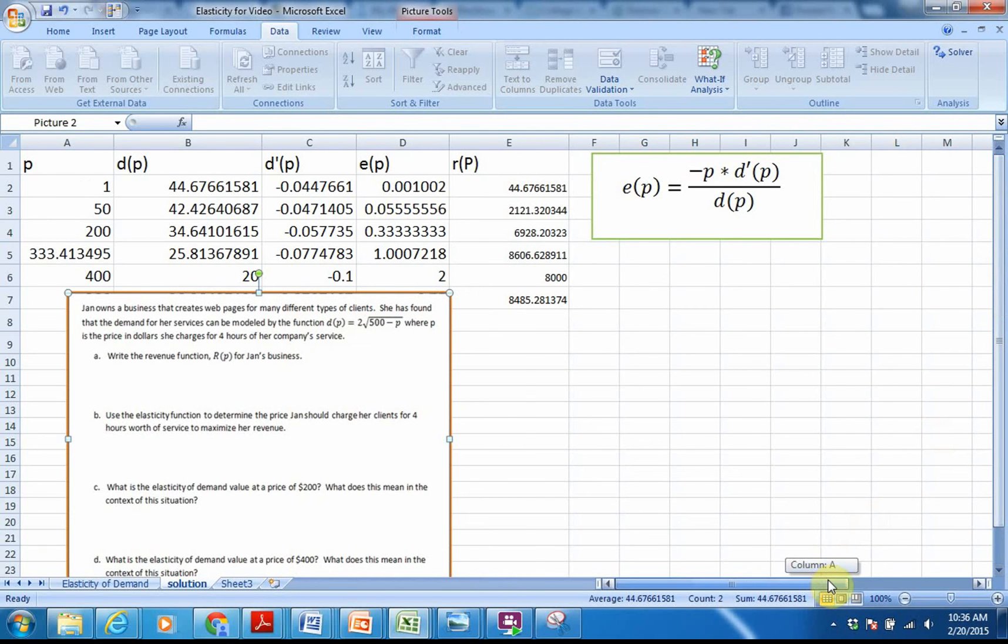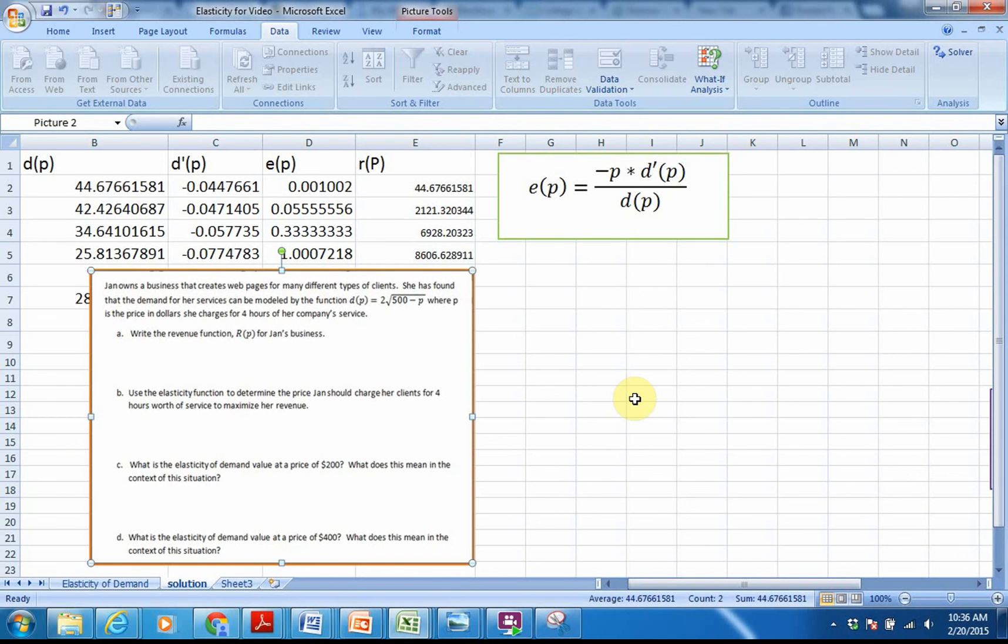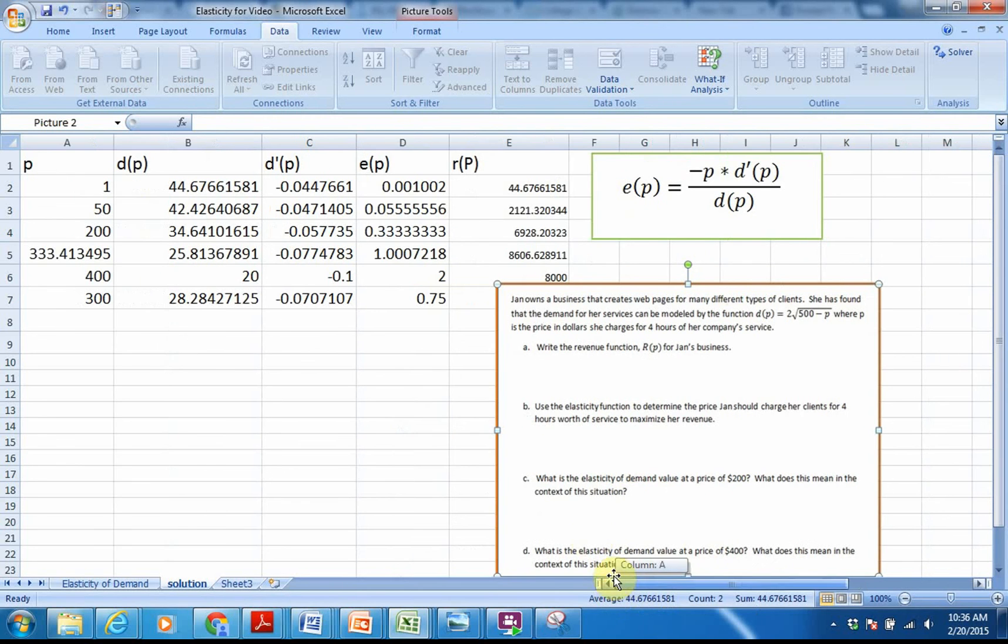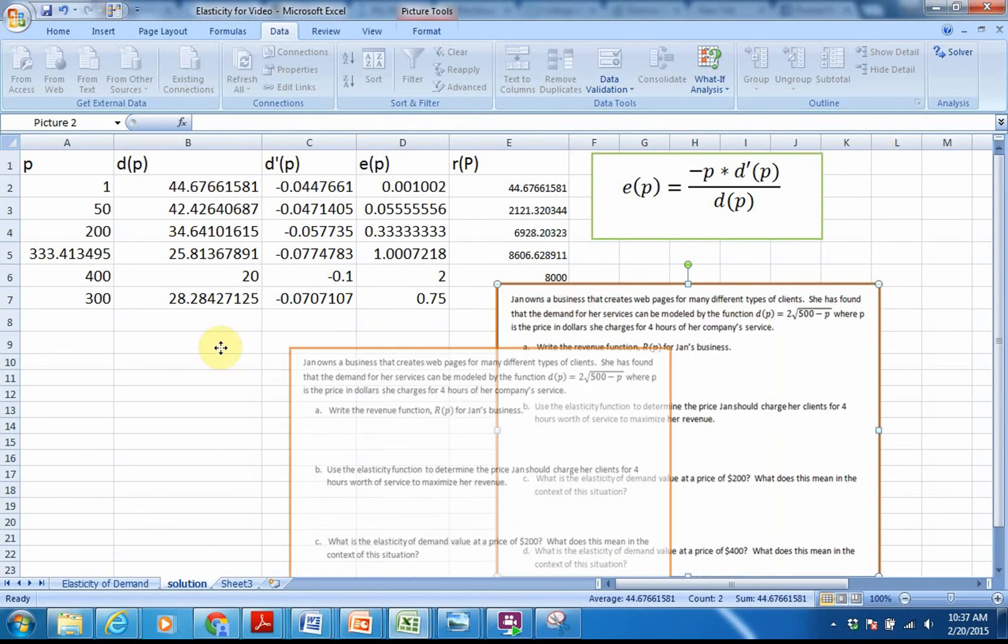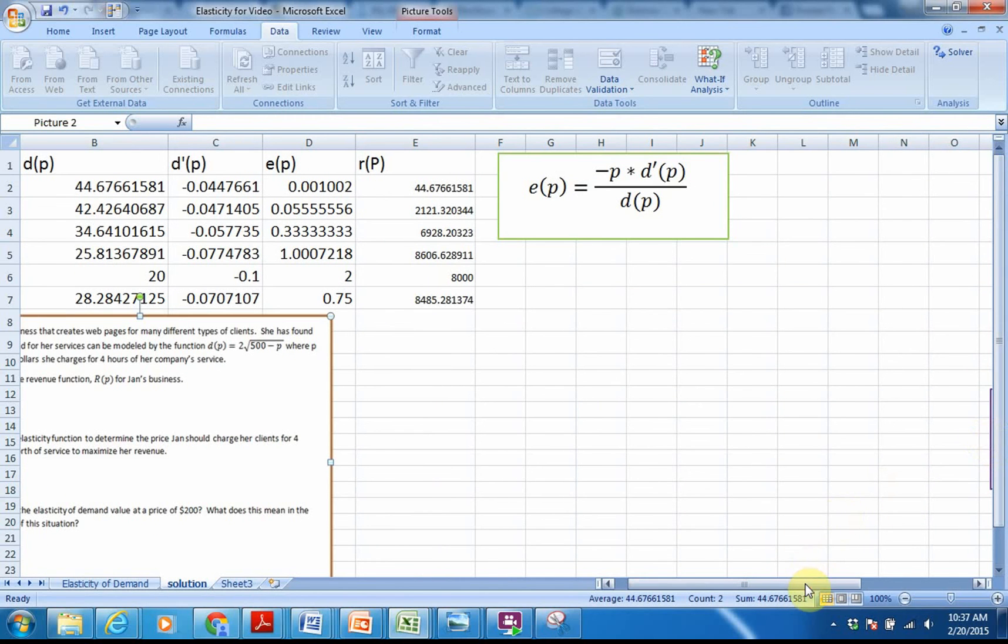So let's take a look now at these other questions that we need to answer. C here says what is the elasticity of demand value at a price of $200, and what does that mean in this situation? So if you take a look at $200, at a price of $200, the elasticity value is 0.33. That means at a price of $200, you would want to increase the price to increase revenue. And then this last one, what is the elasticity of demand value at a price of $400? Well, at a price of $400, elasticity of demand is 2. We would want to lower the price to increase revenue.